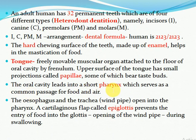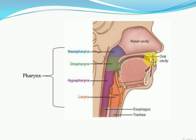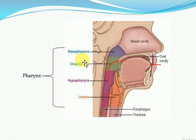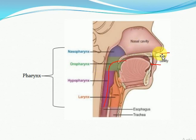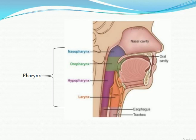The oral cavity leads into a short pharynx, which serves as a common passage for food and air. The oral cavity opens into the pharynx, and the nasal cavity also opens into the pharynx. That is why the book states that the pharynx is the common passage for air and food.